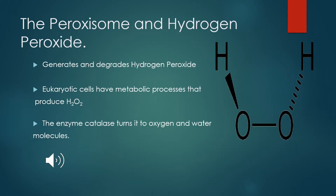The main function of the peroxisome is to generate and degrade hydrogen peroxide. In eukaryotic organisms, there are metabolisms that produce H2O2, or hydrogen peroxide, which is very harmful to the cell and to the organism. The enzyme catalase acts upon the molecule and turns it to oxygen and water.